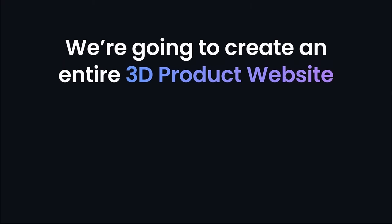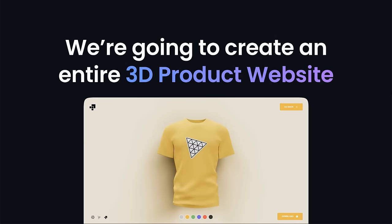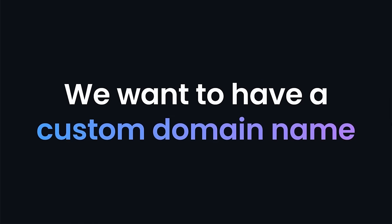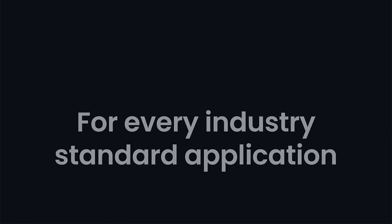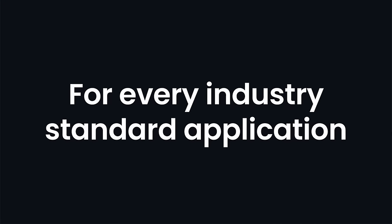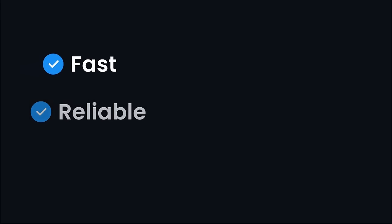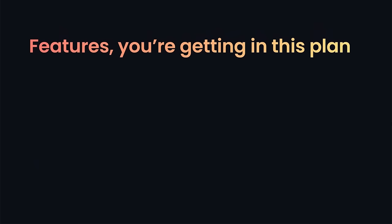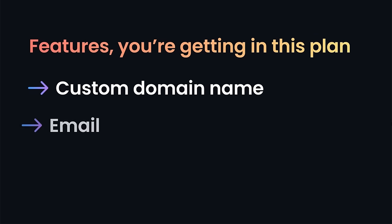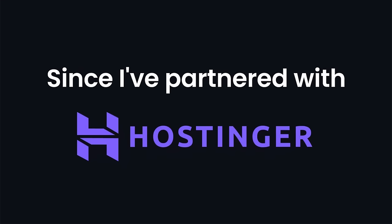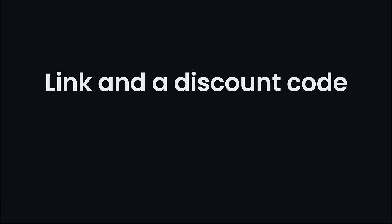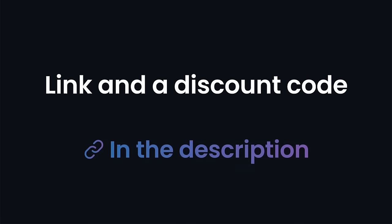We're going to create an entire 3D product website, so we want to have a custom domain name to be credible. For every industry-standard application, such as the one you're building in this video, we need it to be fast, reliable, and trustworthy. Features like a custom domain name, email, and speed make all the difference. Since I partnered with Hostinger, they decided to give you an even bigger discount — you can find the link and a unique discount code in the description.